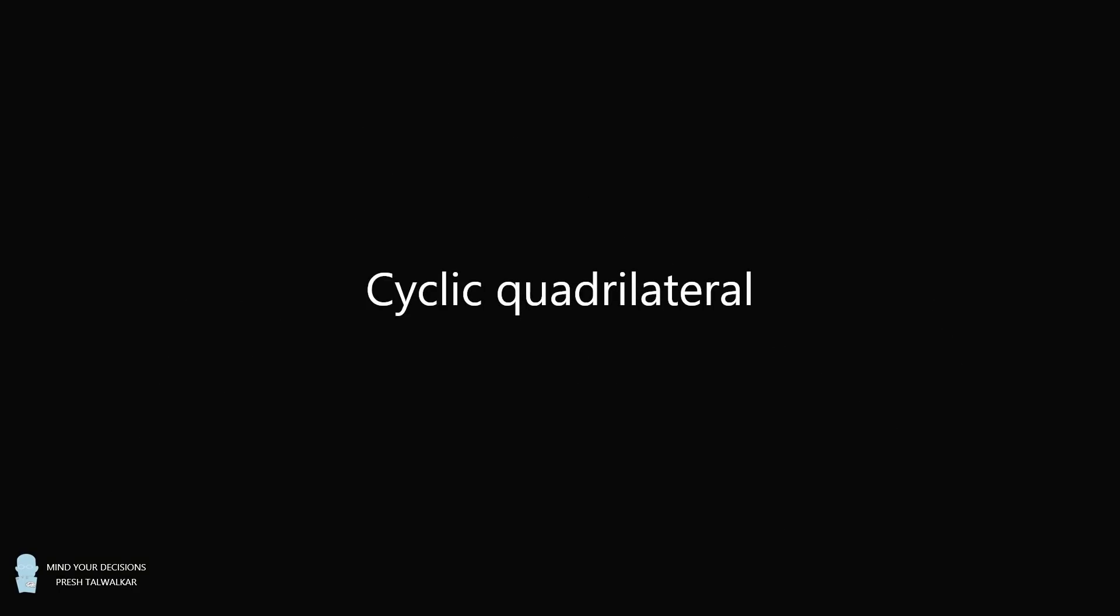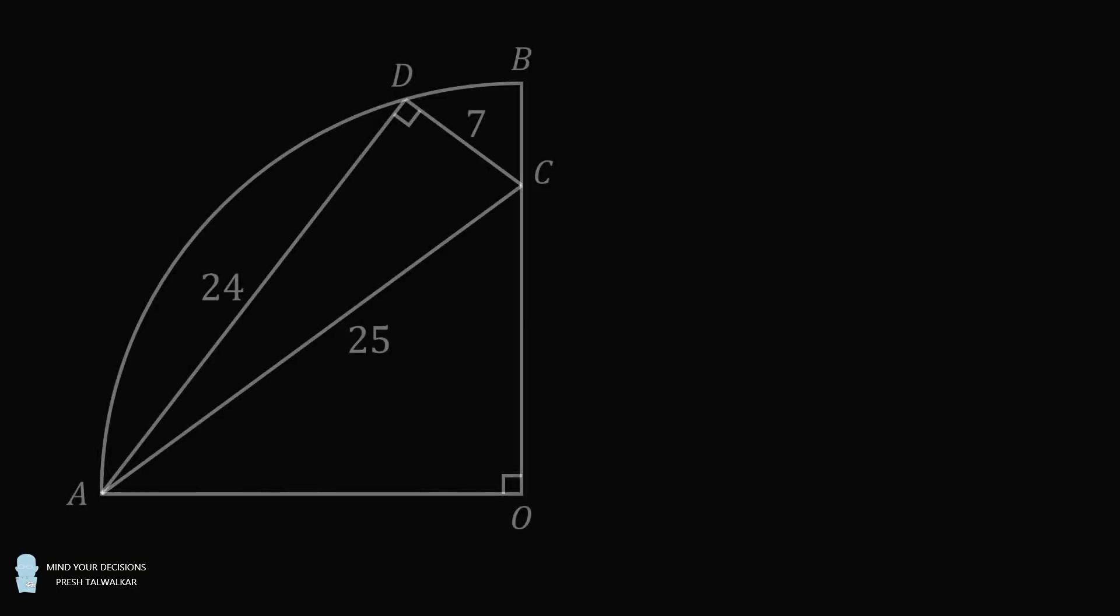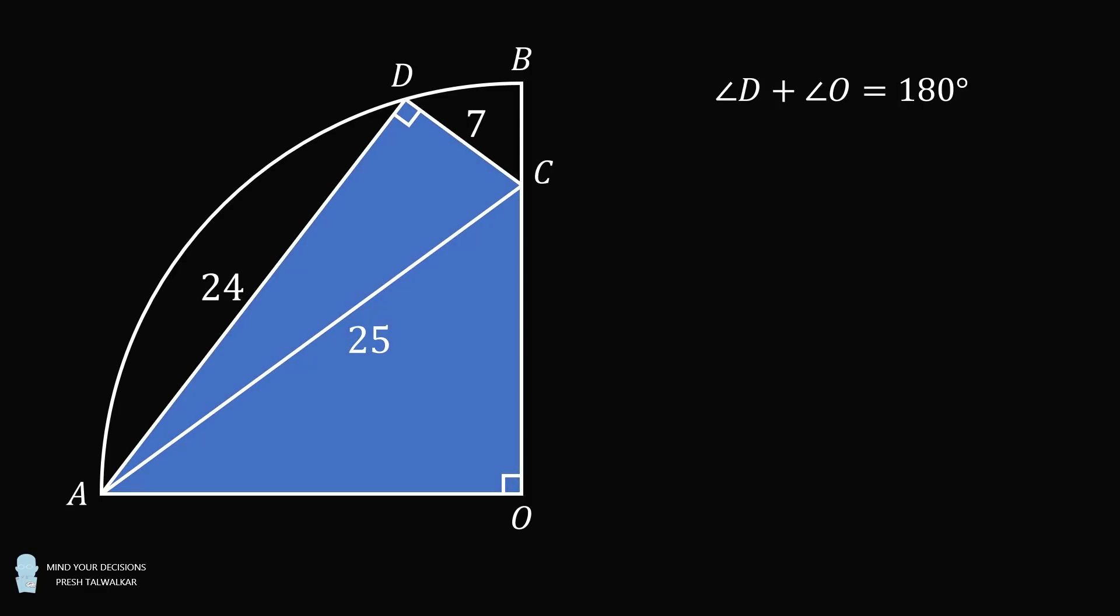Now on to solution 2 that involves a cyclic quadrilateral. Let's start from this part of the diagram. Notice that angle D plus angle O, each of them is equal to 90 degrees, and their sum will be equal to 180 degrees. In the quadrilateral AOCD, two of these opposite angles have a sum equal to 180 degrees. Therefore, AOCD is a cyclic quadrilateral. This means we can use Ptolemy's theorem. The product of the diagonals of the quadrilateral will be equal to the sum of the product of opposite sides.